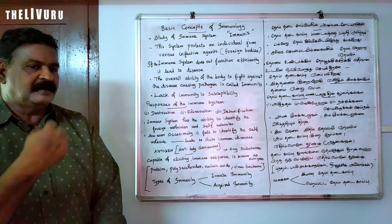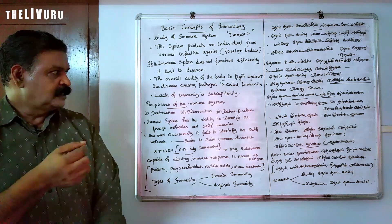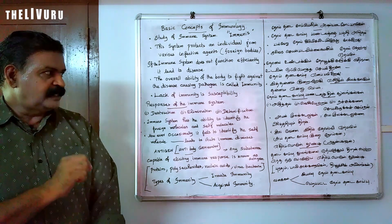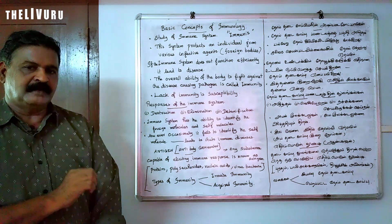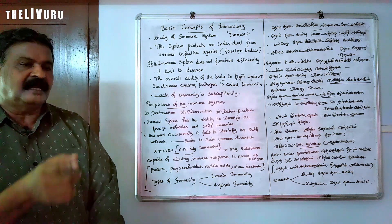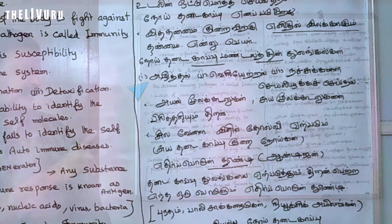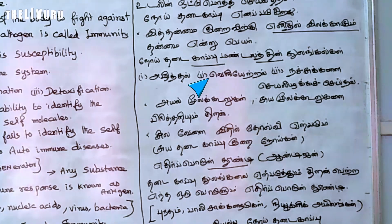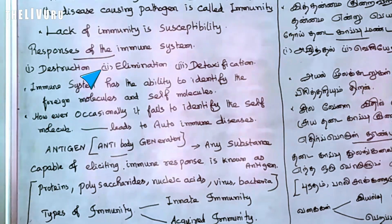There are three different mechanisms the immune system uses to handle threats: Destruction, Elimination, and Detoxification.